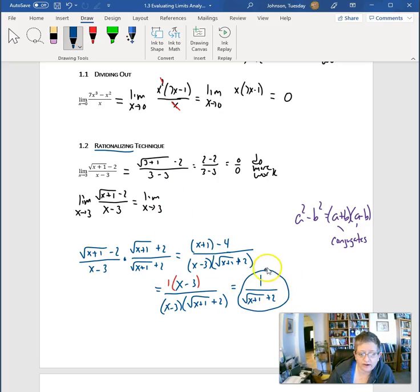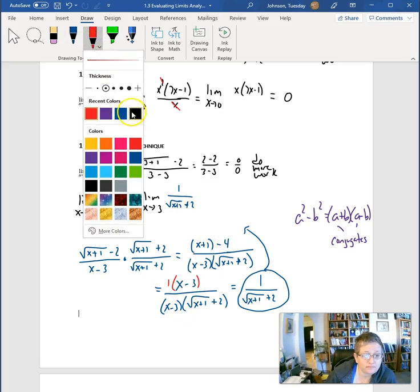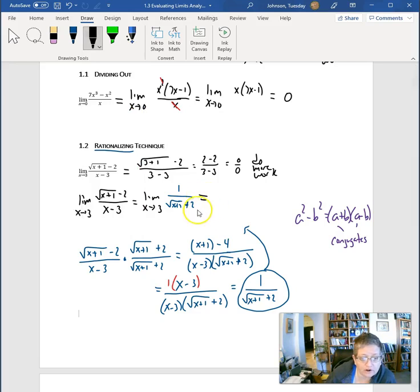This function we found after rationalizing is our similar function everywhere except at x equals 3. We just cancel out the issue at x equals 3. Pretty clever, isn't it? Now we can find this limit.